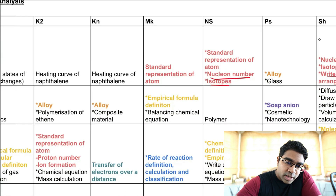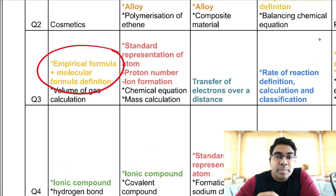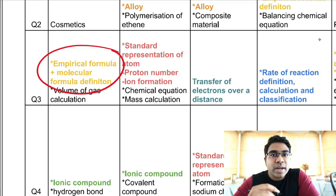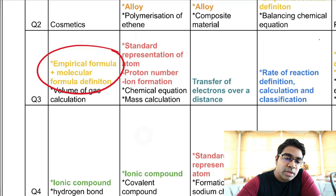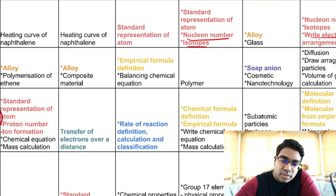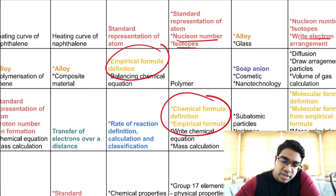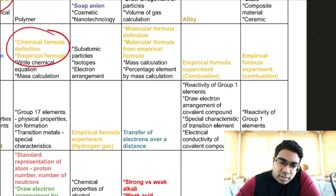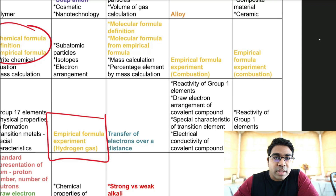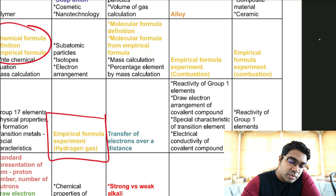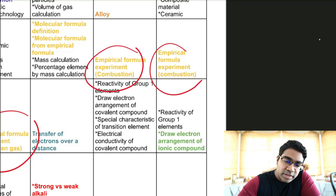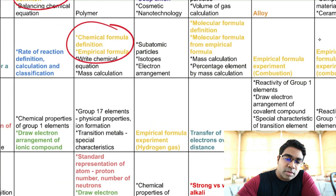The next topic that is very common for Section A is empirical formula and molecular formula. You have to memorize the definitions for empirical formula and molecular formula, and you need to know the calculations — how to find molecular formula and empirical formula. There are also years where the experiment for empirical formula comes out, involving either hydrogen gas or combustion with oxygen, metal with oxygen. So you need to be familiar with these.